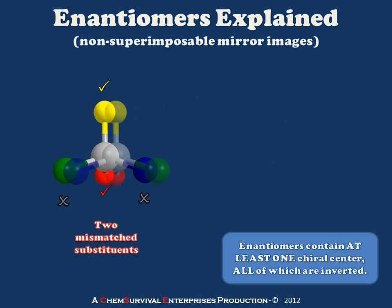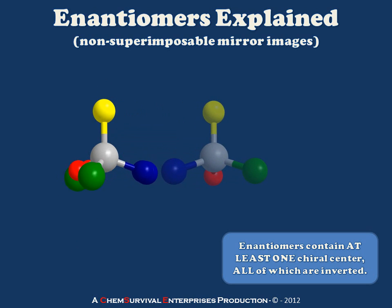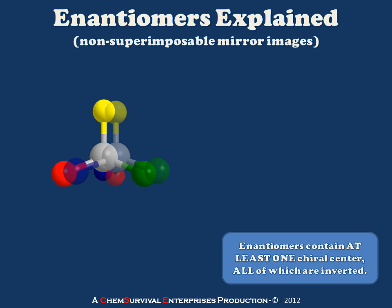When I attempt to overlap my molecules as they were oriented after the reflection, you'll notice that the blue and green substituents do not overlap with one another. If these were truly the same molecule, I should be able to rotate and translate one or both molecules and get them to overlap perfectly. But rotating to get the greens to overlap only leads to another problem where the red and blue do not overlap.